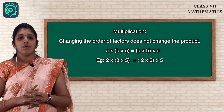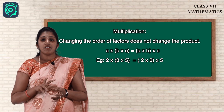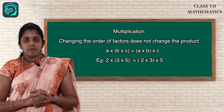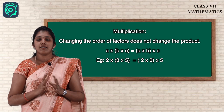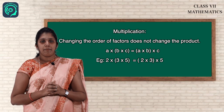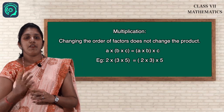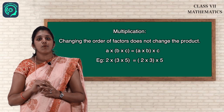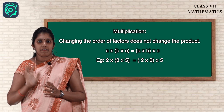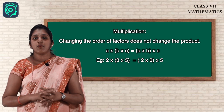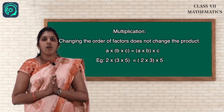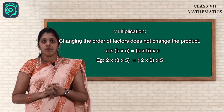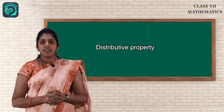For multiplication, associative property states: (A into B) into C equals A into (B into C). Changing the grouping of the factors does not change the product. For example, 2 into (3 into 5) equals (2 into 3) into 5. When you change the grouping, the answer or product remains the same. So associative property holds good for multiplication.